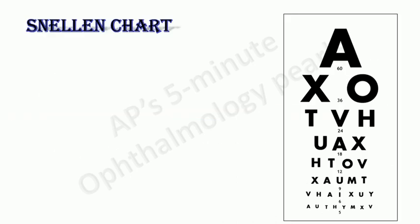The Snellen chart consists of a minimum of seven rows of letters. Sometimes it may contain eight or nine. It consists of black letters on an opaque or retro illuminated background to maximize contrast. There is one letter in the first row, two in the second row and so on. The seventh row has got seven letters.